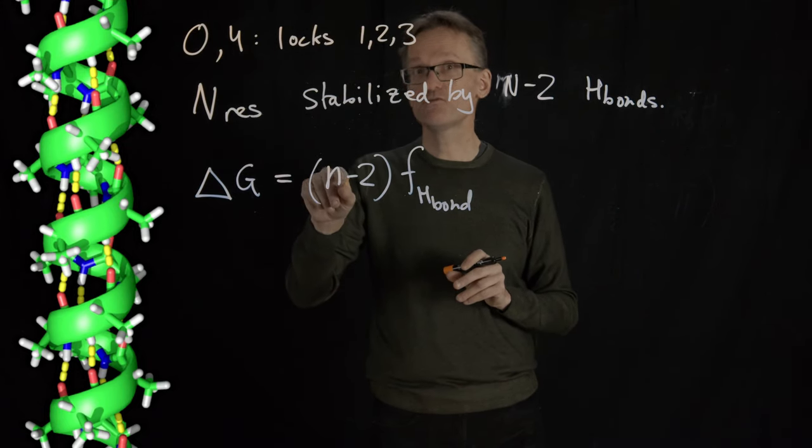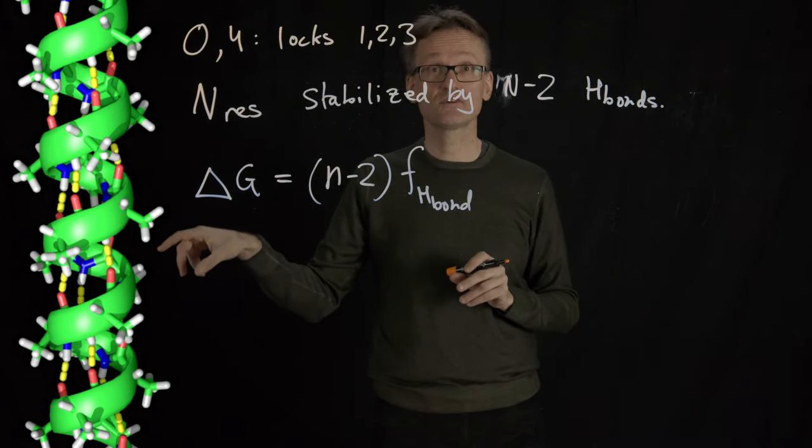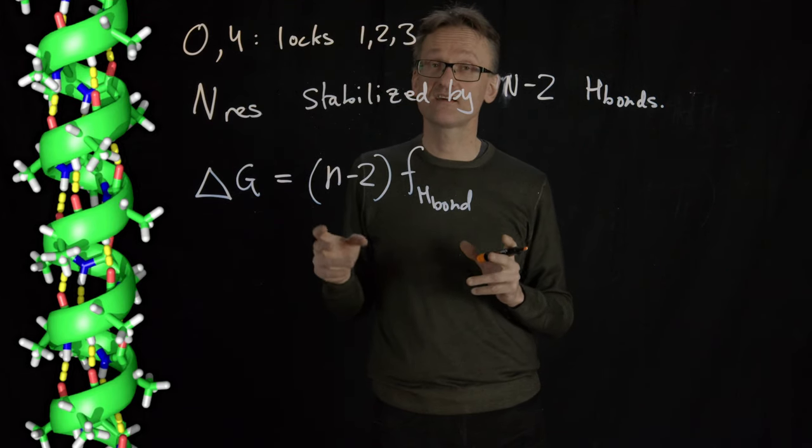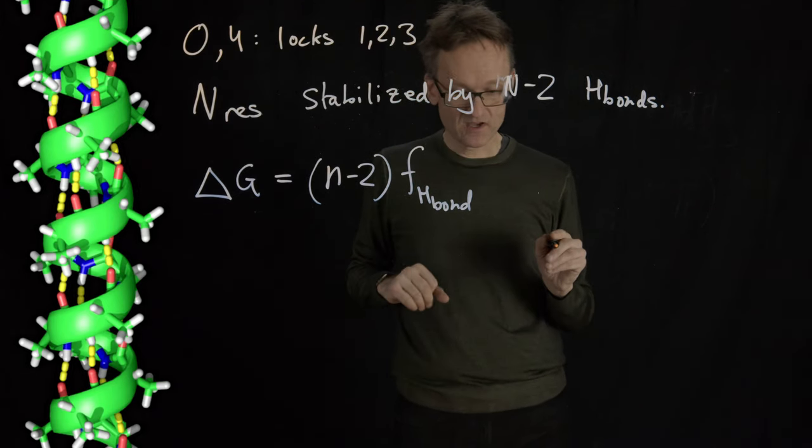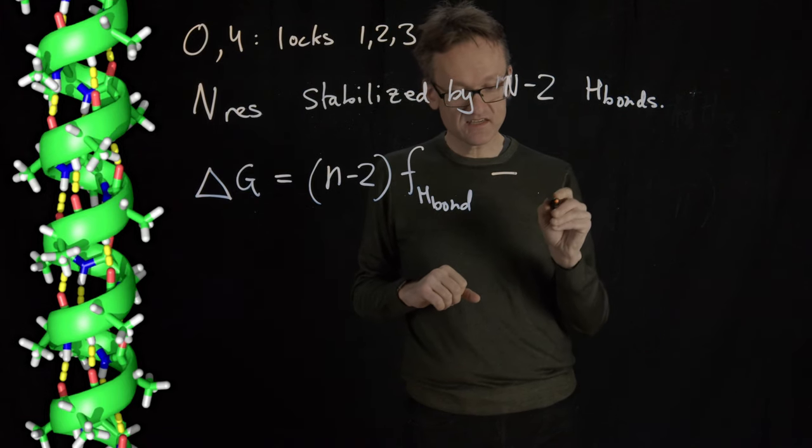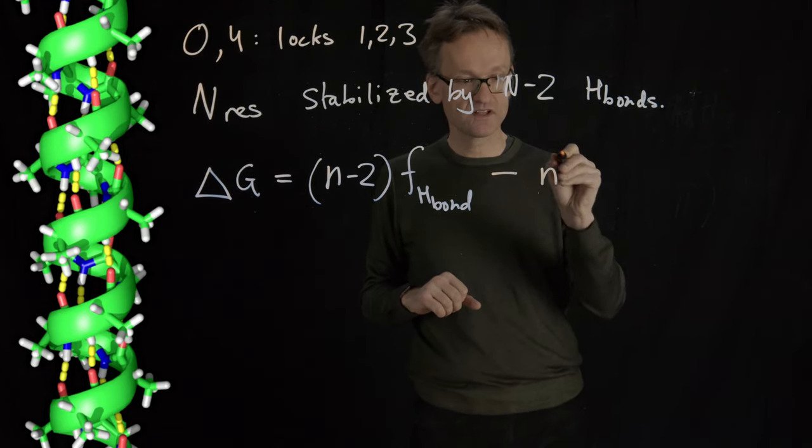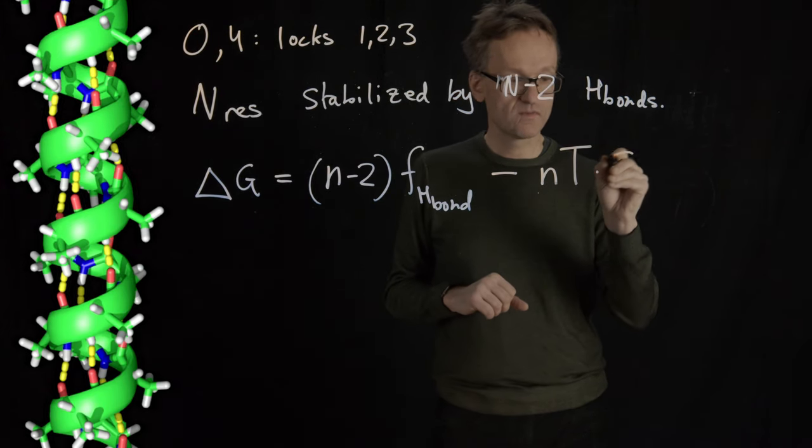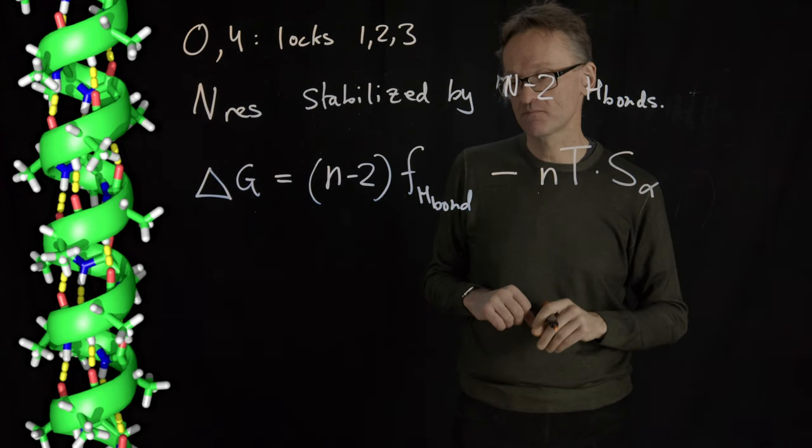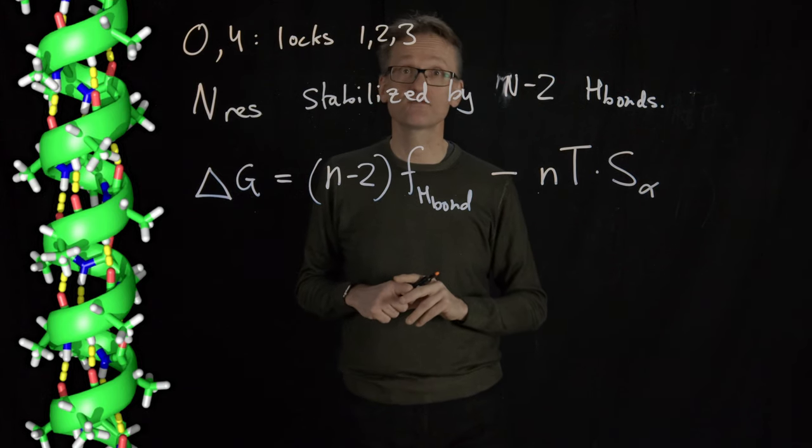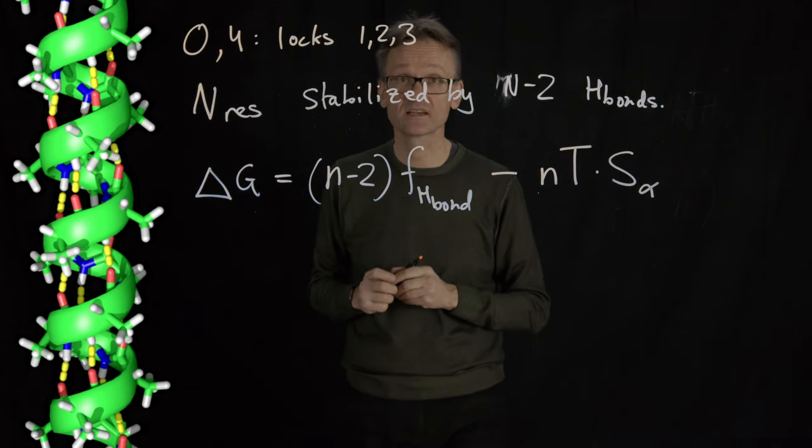But to do this, I had to take n residues and lock that into helical shape, right? And locking them into helical shape means losing entropy. So there is going to be T times S here. So it's n residues multiplied by the temperature multiplied by S alpha. That is the entropy difference of moving one residue to a helix.